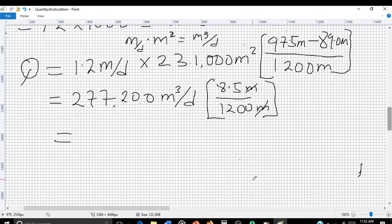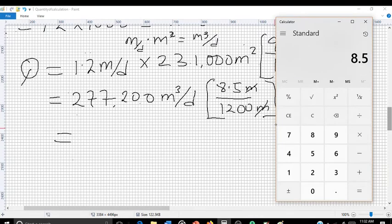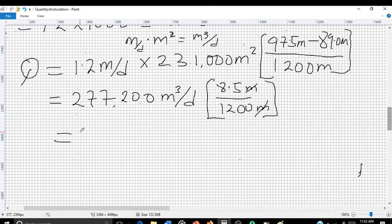Close bracket. These meters will cancel out. If we divide 8.5 by 1,200, we're going to get 0.00708333.